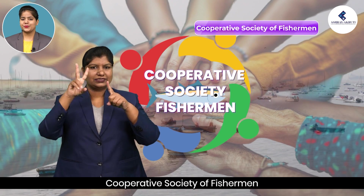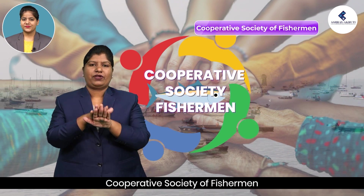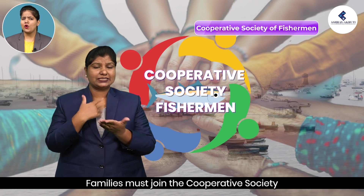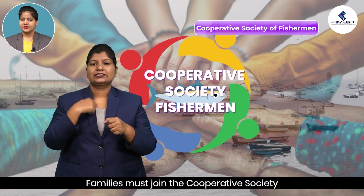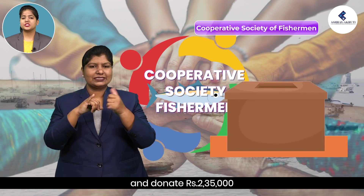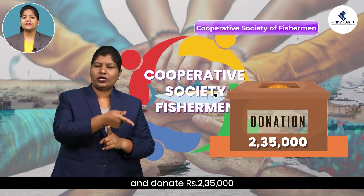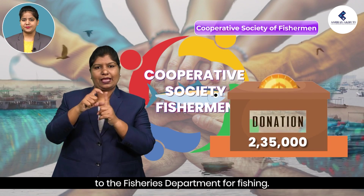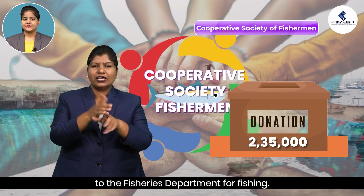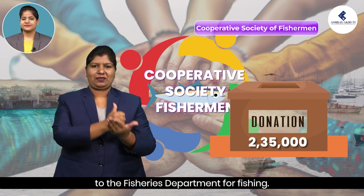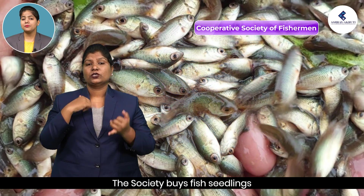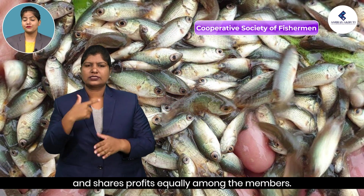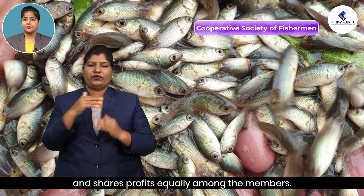Cooperative Society of Fishermen: Families must join the Cooperative Society and donate Rs. 2,35,000 to the fisheries department for fishing rights. The Society buys fish seedlings and shares profits equally among the members.